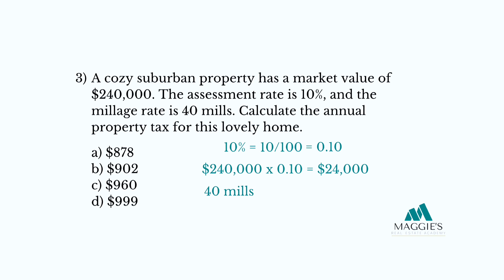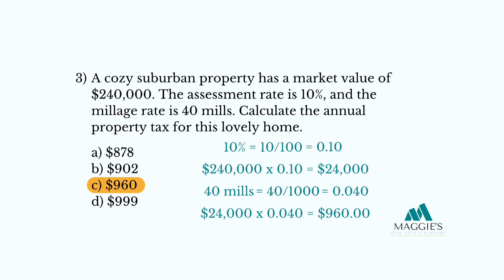Step 3: convert the millage rate. 40 mills divided by 1,000 equals 0.040. Step 4: multiply the assessed amount by the millage rate in decimal form. $24,000 times 0.040 equals $960. So the annual property tax for this lovely home is $960.